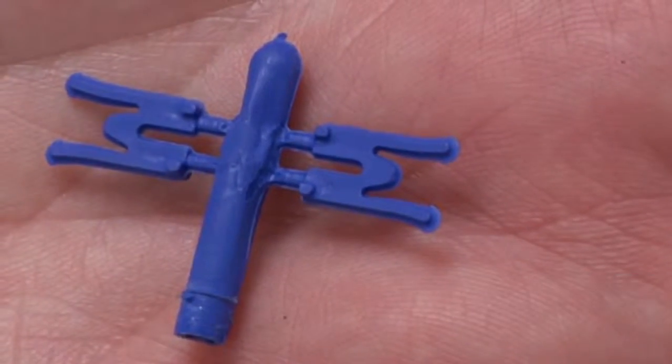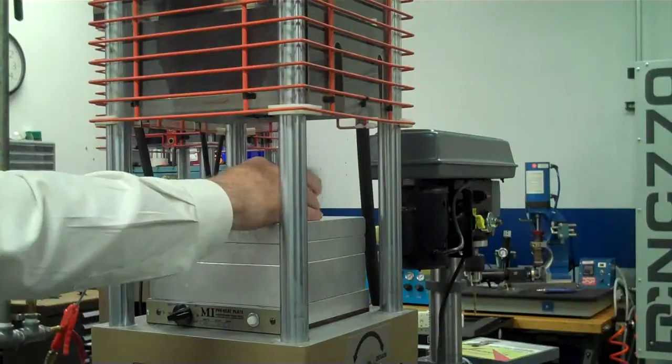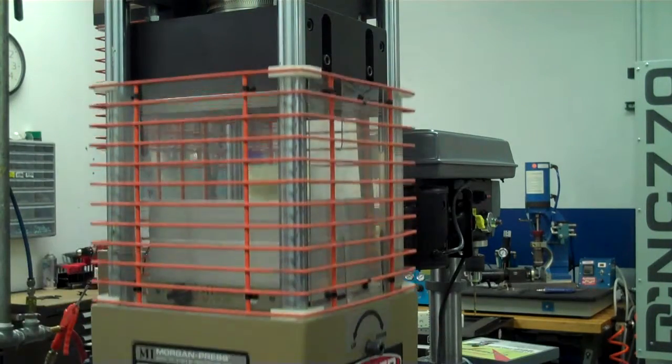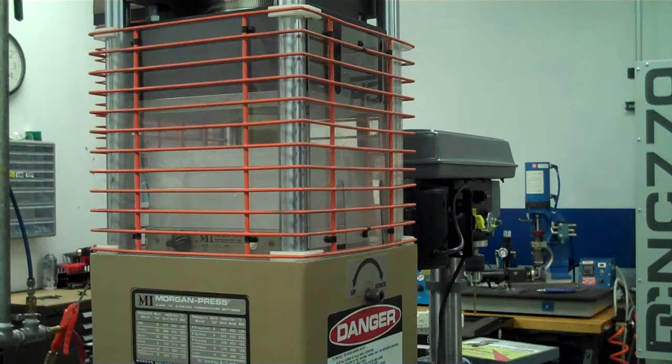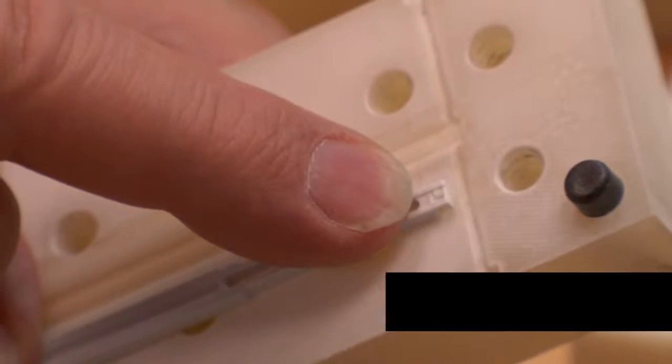A mold this large, when we put it in our Morgan, we'll clamp that with eight to ten tons of pressure—no problem at all. You can see this tiny little feature here. That part of the mold was 3D printed in.